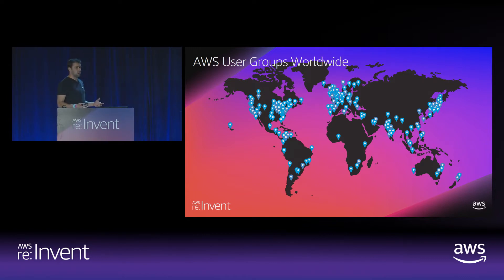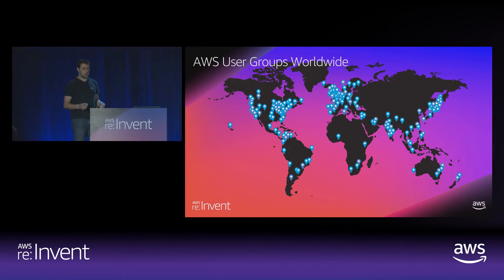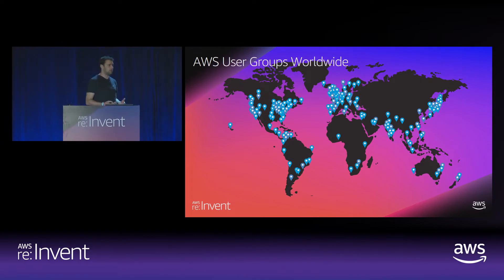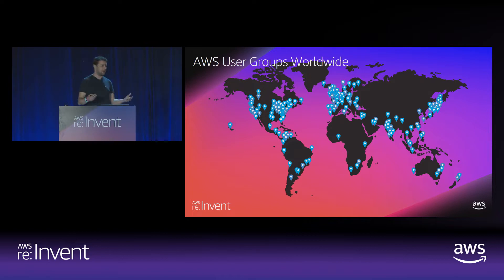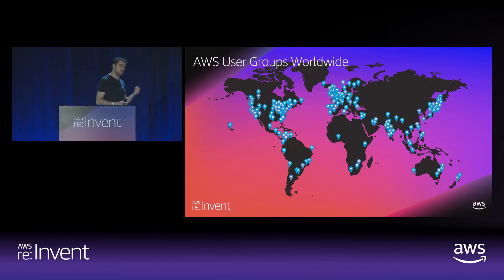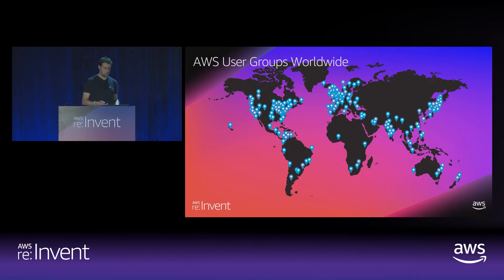I look after the UK and Ireland region, and we have 22 user groups at the moment. Our user groups are special. We take an active step to stand back — we don't enforce any rules on our user groups, but we provide speakers. We want our user groups to be independent. Independence in a user group is great because you get the option to talk about the good, the bad, and the ugly of AWS — great feedback for us and a great learning experience for you. You learn how not to do things as well as how to do them.